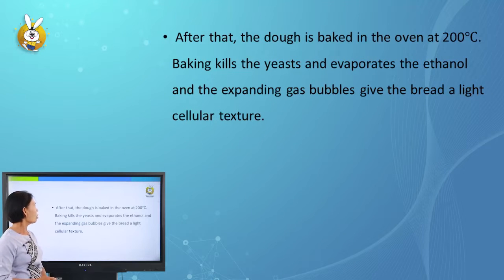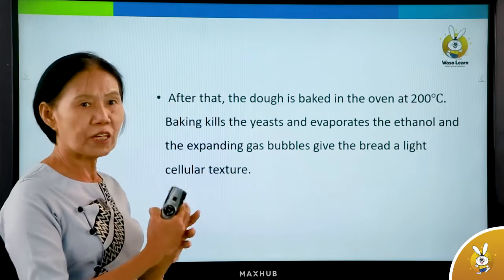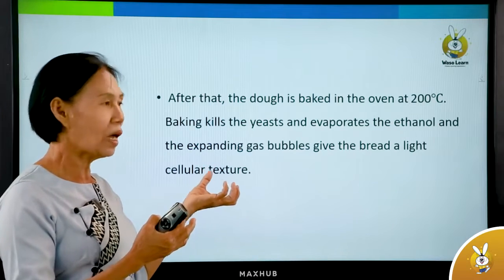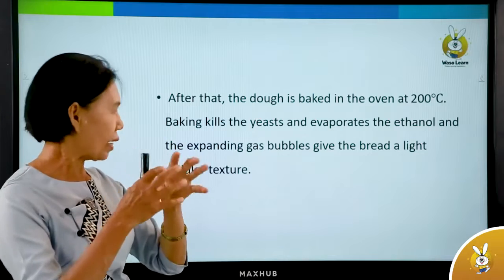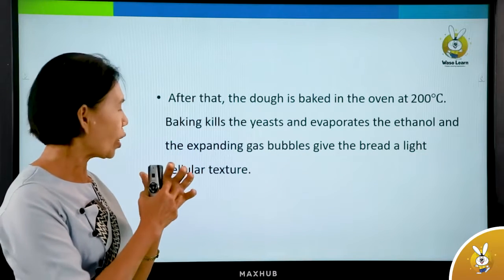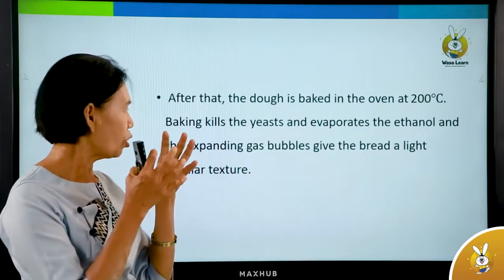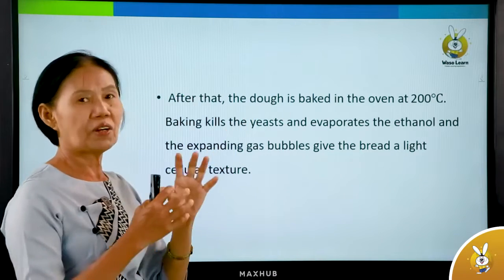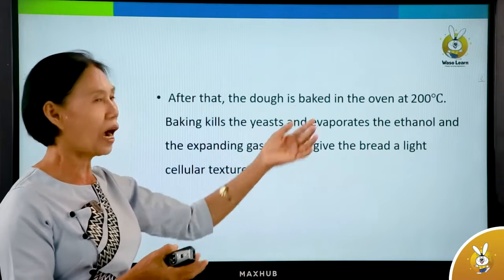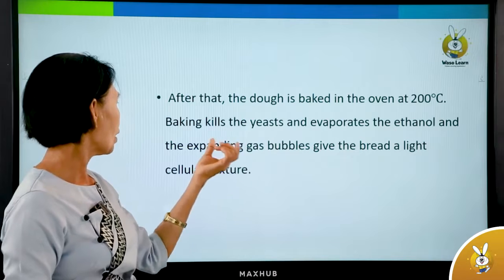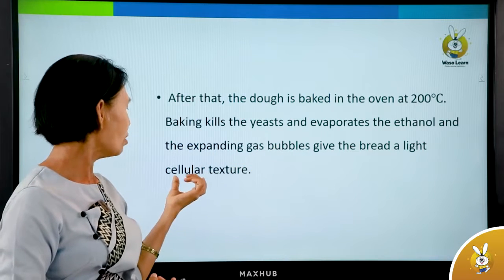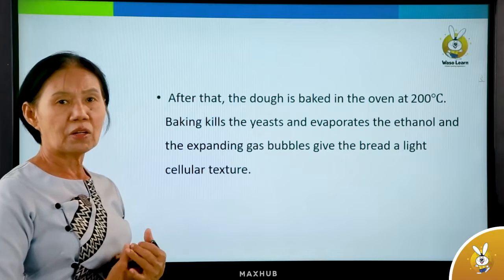After that, the dough is baked in the oven at 200 degrees Celsius. Baking kills the yeast and evaporates the ethanol. The expanding gas bubbles give the bread a light cellular texture.